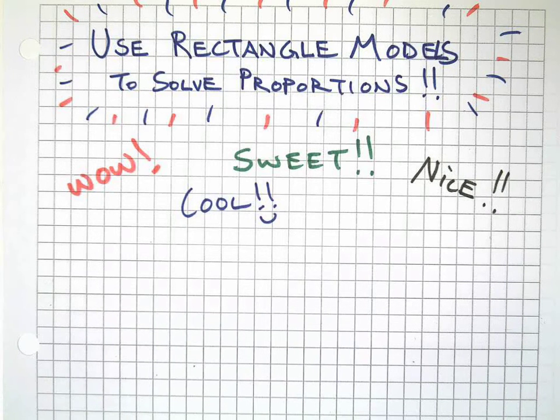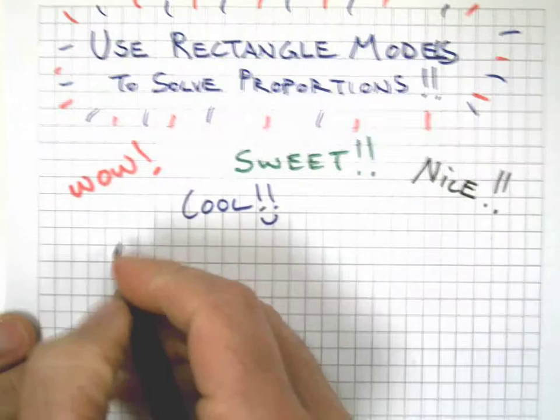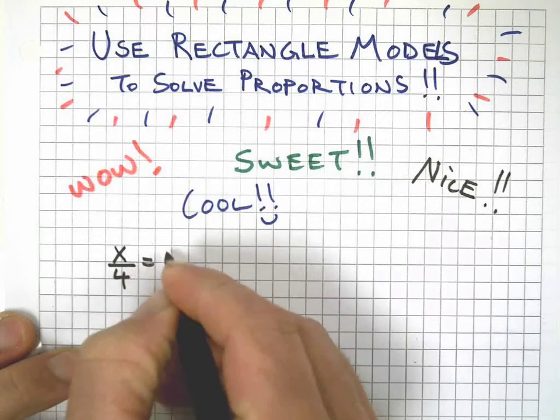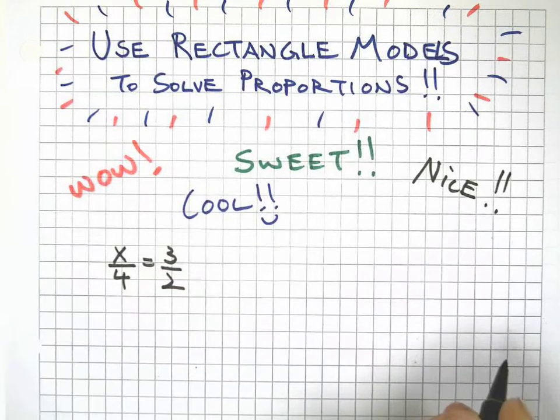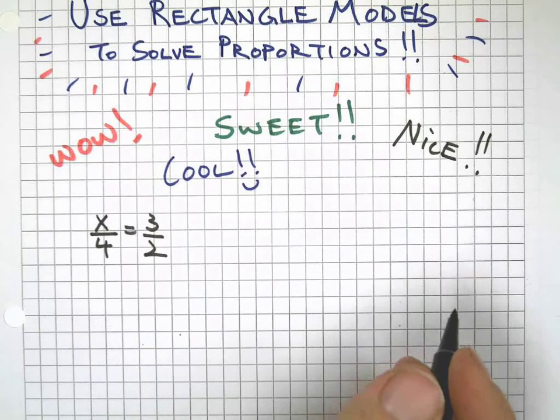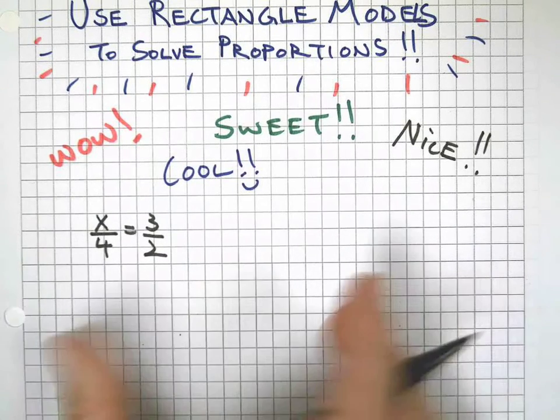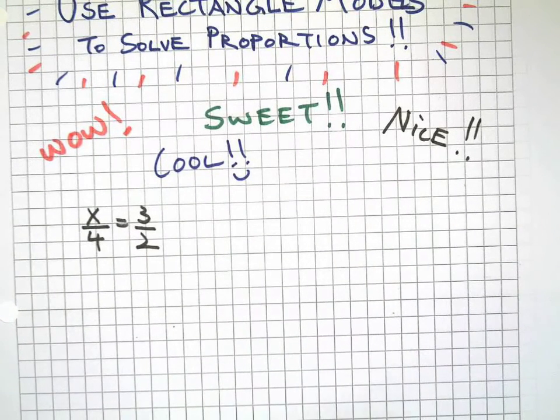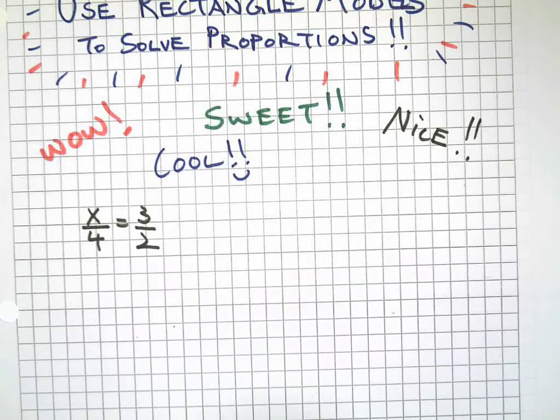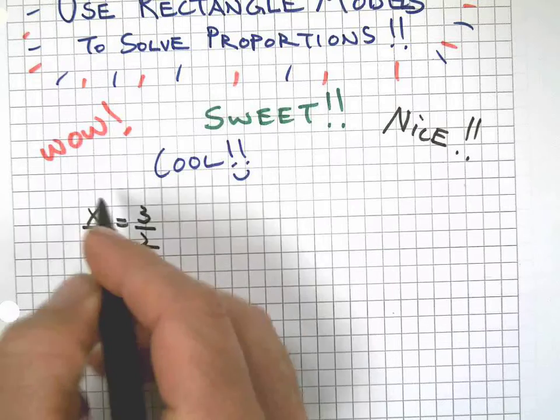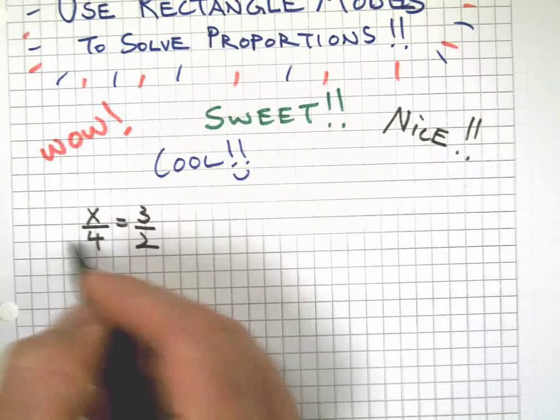So here we go. We can use rectangle models to solve proportions. This is crazy. Check this out. Let's say we have our simple proportion like this. Now I'm sure you probably have a background and some technique or strategy you use to solve this, but stick with me on this. I want you to understand what's happening and I want to show you a concrete visual way of doing this.